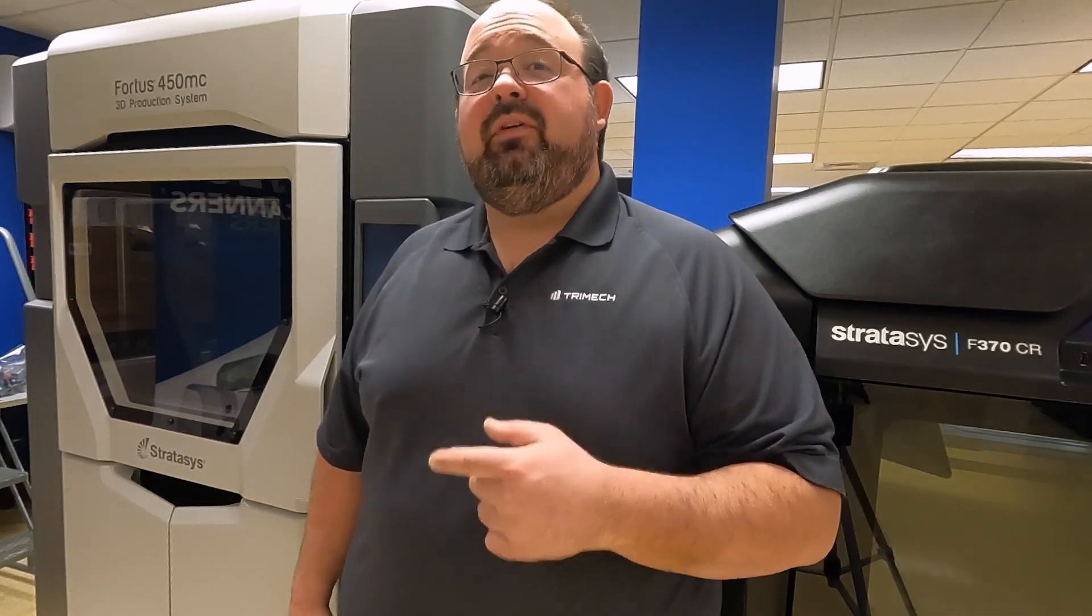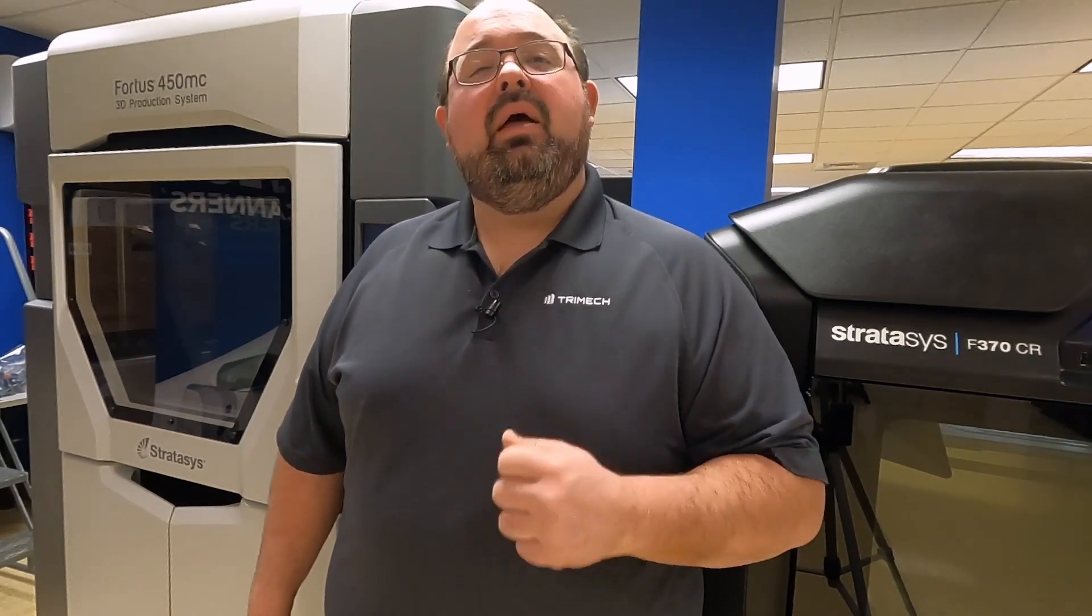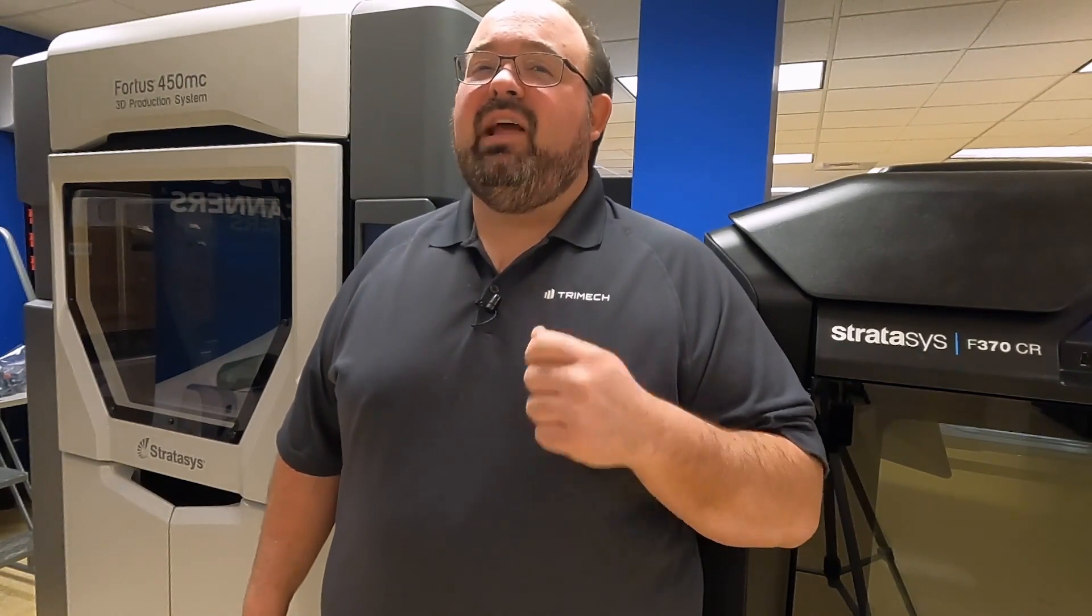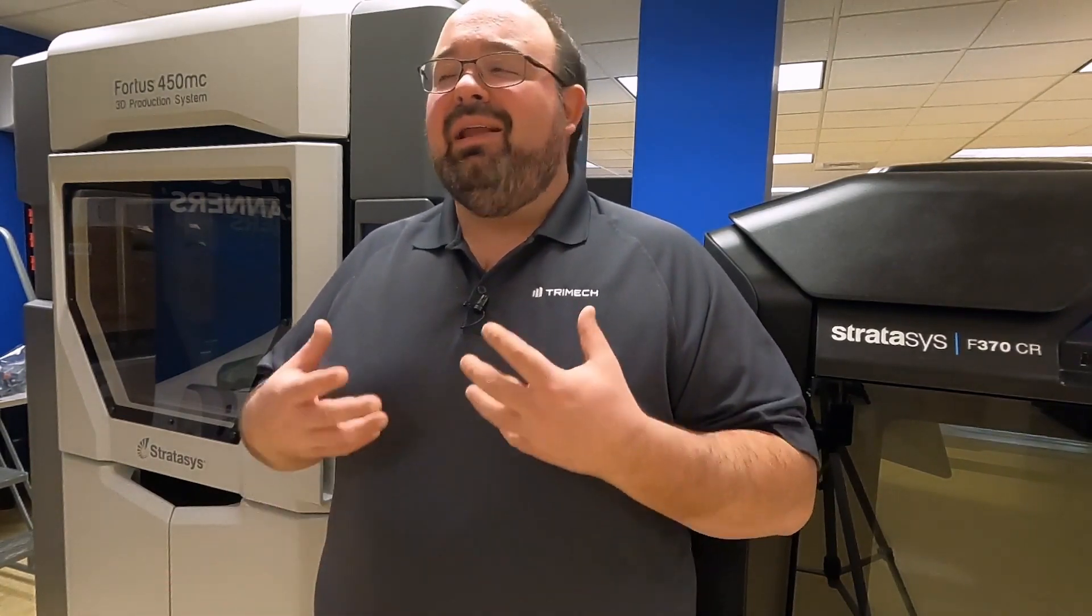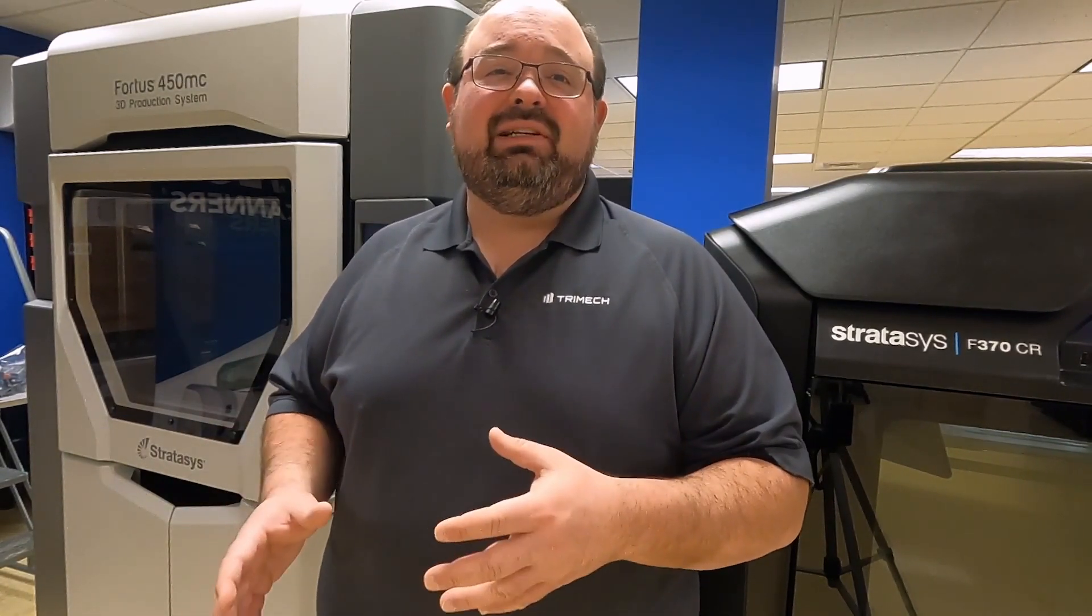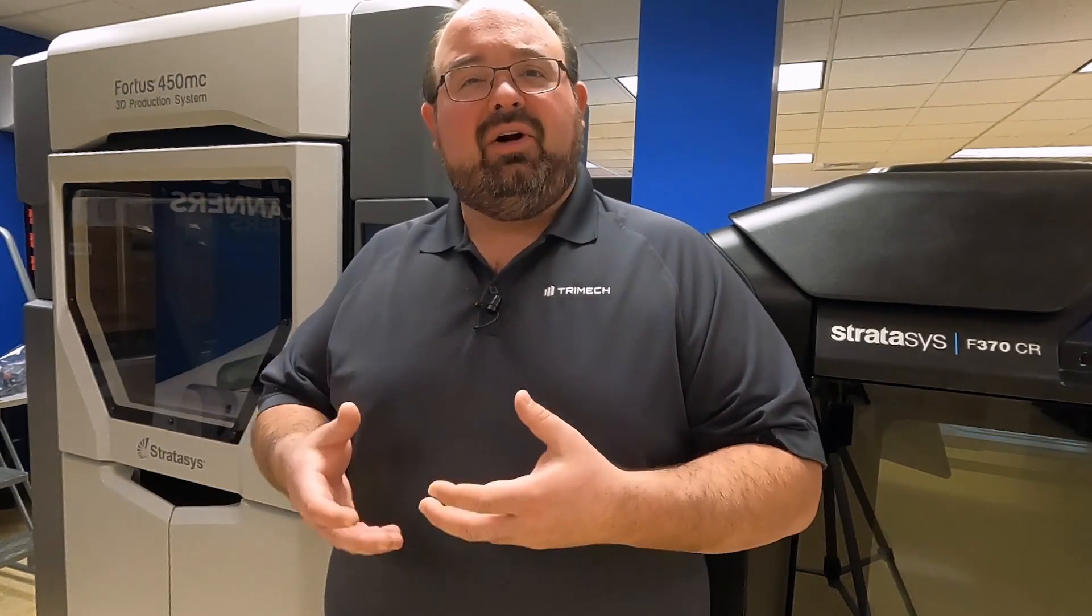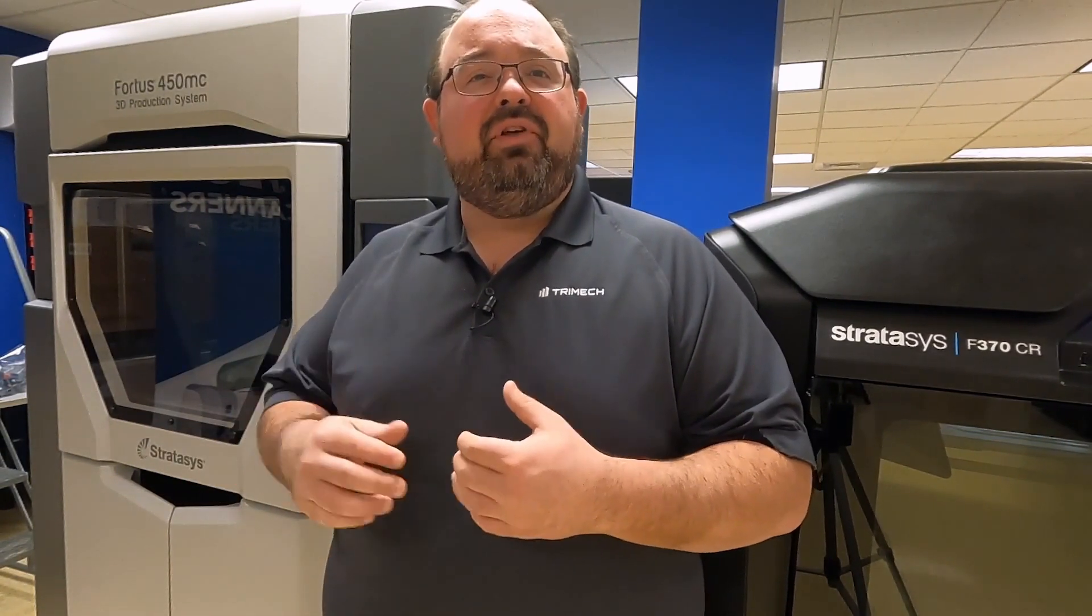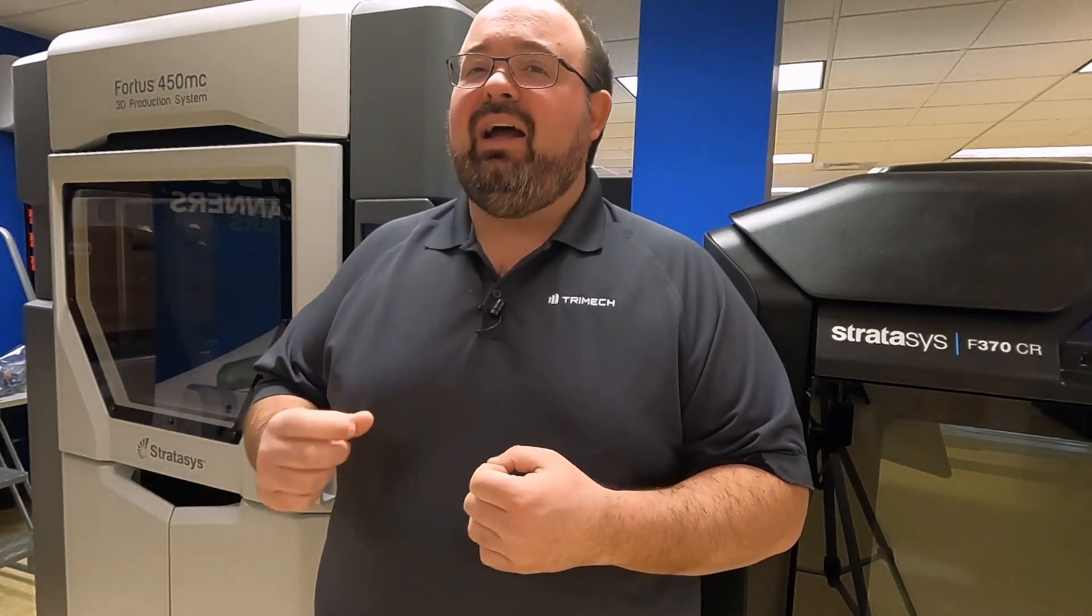We love using the Fortis 450 for thermoform molds because of the polycarbonate material. Polycarbonate can get up to the temperatures that we need to run at consistently, over 200 degrees Fahrenheit, and doesn't flinch at those stresses. It's incredibly rigid, so it's not going to warp on us at all. It'll just stay nice and flat on the bed of the thermoformer.